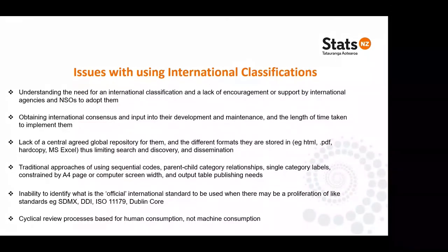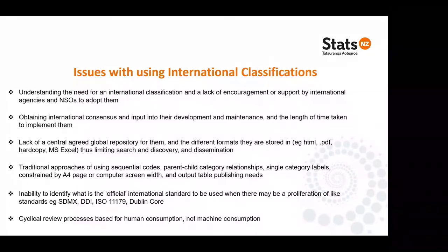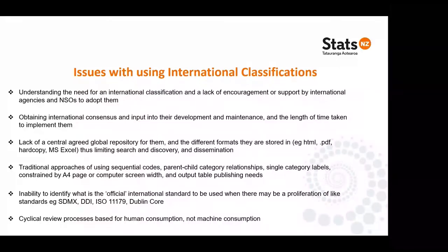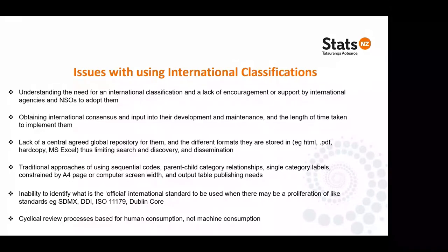The traditional approaches of using sequential codes and parent-child category relationships, single labels — all classification development is still constrained by the mentality of having an A4 page in front of you, or a computer screen and the width that provides, or the structure of an output table where you can only have so many characters in your labels, you can only have one category — and on it goes. You've got no flexibility and you can't get context and fluidity in the classifications. They're very rigid, very hard to change, and also very difficult to implement.